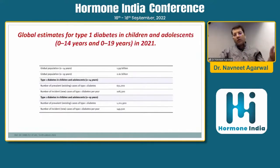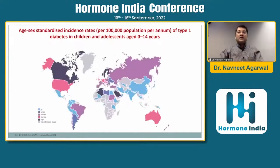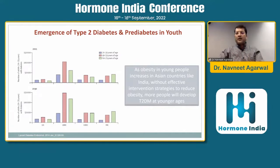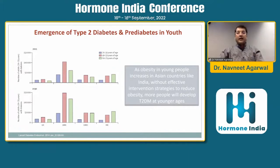It's not only type 2 diabetes that is increasing — there is also increasing prevalence of type 1 diabetes globally. But there is a particularly notable emergence of type 2 diabetes and pre-diabetes in youth. As obesity increases in the young population, particularly in Indian and Asian countries as well as European and American countries, if interventional studies for reducing obesity are not done, these young adults will develop type 2 diabetes at a later age.